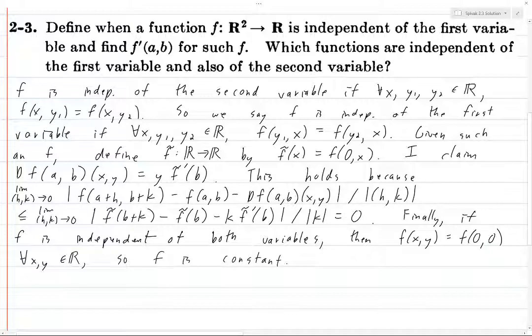And likewise, obviously, any function which is constant is independent of both variables, because if you change any of the, if you change the value of any of the inputs, it doesn't matter, because it's a constant function. So the functions which are independent of both variables are precisely functions which are constant.